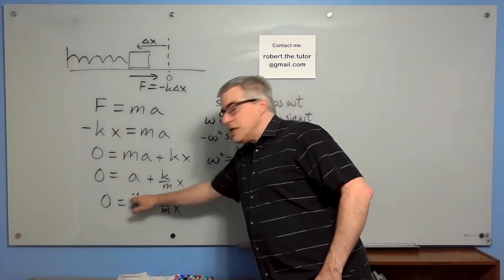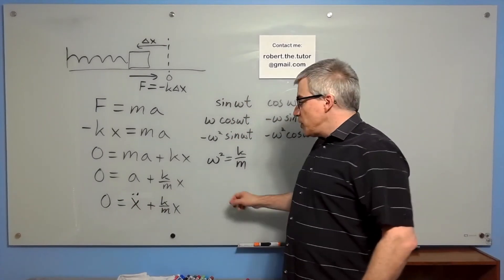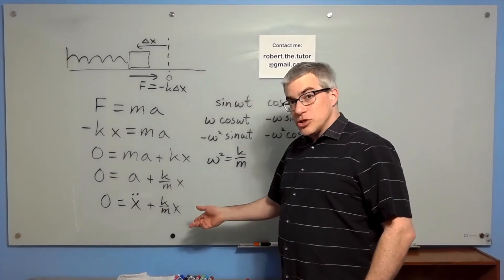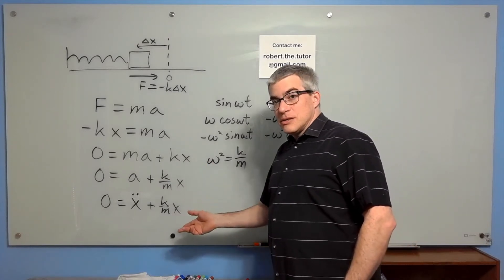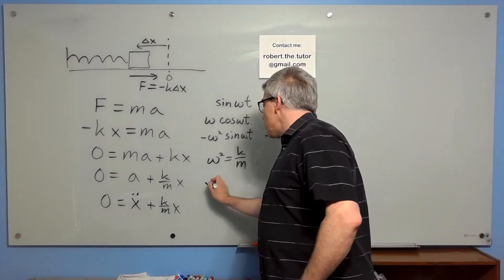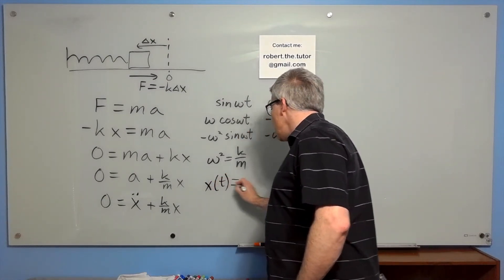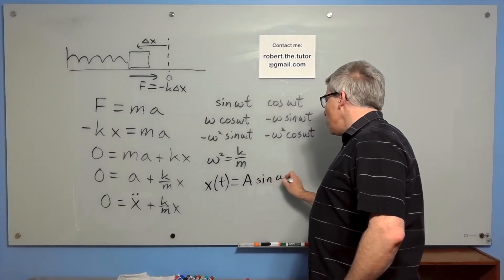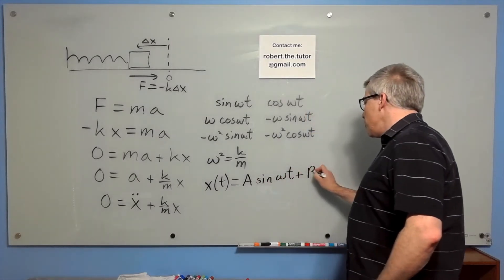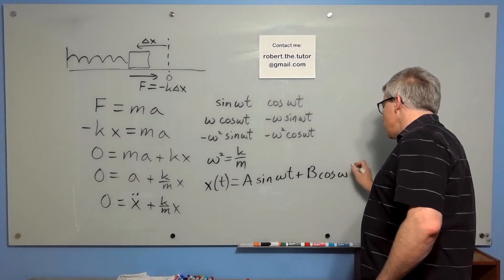Now, this is what we call a linear differential equation. So if you add two solutions, you get a solution. And if you multiply a solution by a constant, you get a solution. So the general solution for x as a function of time would be some constant times the sine omega t plus some other constant times the cosine of omega t.